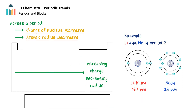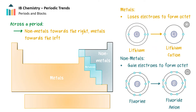Before we go on to discuss other trends, let's quickly mention a very important trend: as the atomic number increases, the charge of the nucleus increases, and as the charge of the nucleus increases, the electrons in the outer shell are more strongly attracted to the nucleus and therefore the atomic radius decreases. Atoms on the left-hand side of a period form bonds by losing electrons to form cations — these elements are the metals. Towards the right-hand side, atoms gain electrons to form anions — these elements are non-metals.